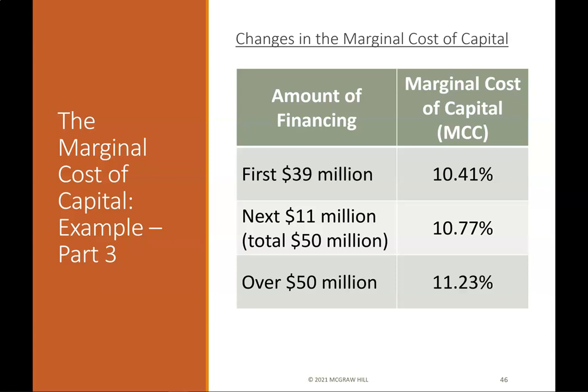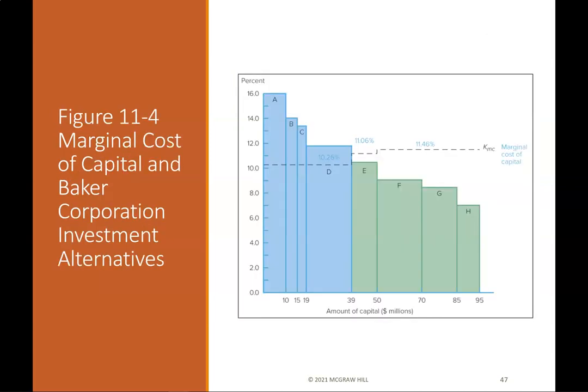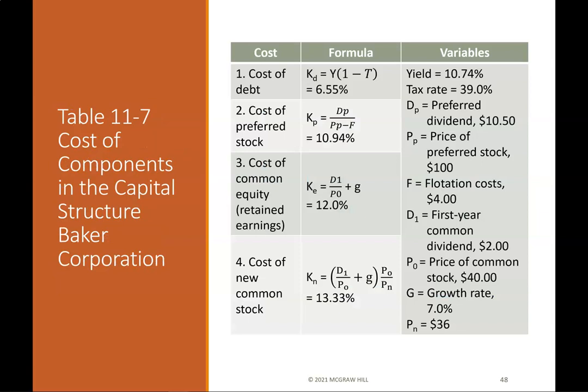Marginal cost of capital example part 3: Changes in the marginal cost of capital are shown by the amount of financing and the marginal cost of capital (MCC). Figure 11-4 is a bar graph for Baker Corporation showing the percentage and amounts of capital in the capital structure. Table 11-7 shows the cost of components: cost of debt is 6.55%, cost of common equity in retained earnings is 12%, and cost of new common stock is 13.33%.